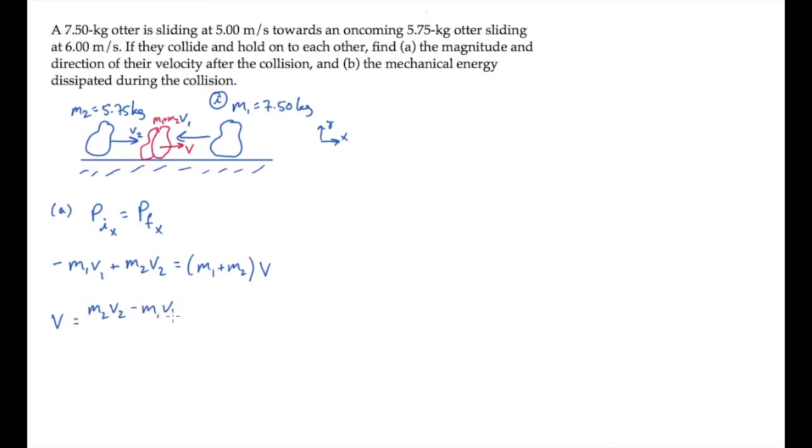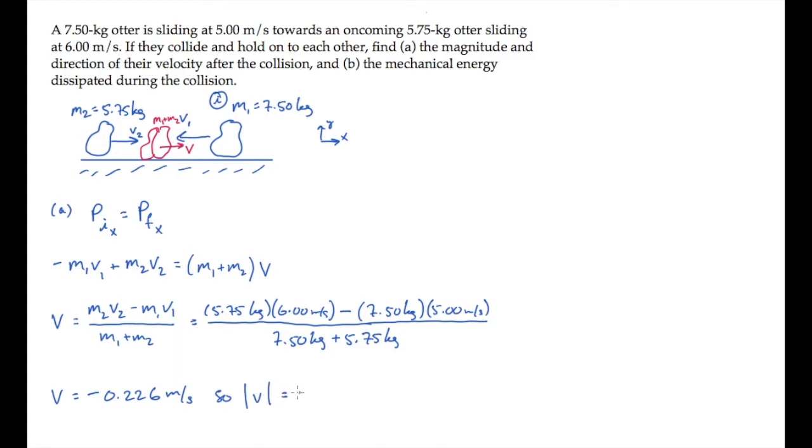Solve this for the common velocity and substitute all the numbers. To find that, it equals negative 0.226 meters per second. So the magnitude of the final velocity is 0.226 meters per second, and they are moving towards the left in the negative x direction.